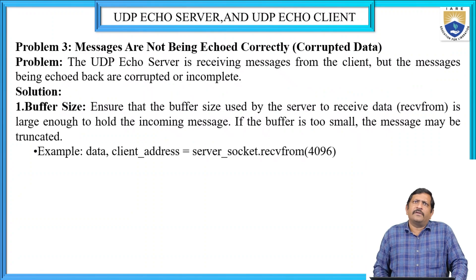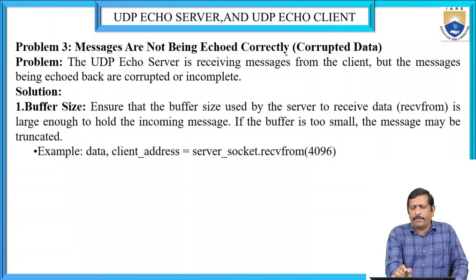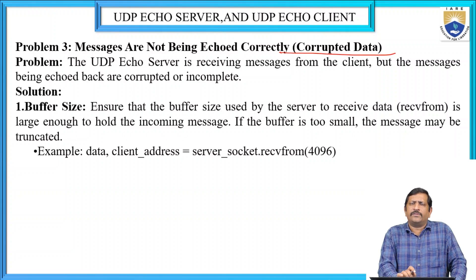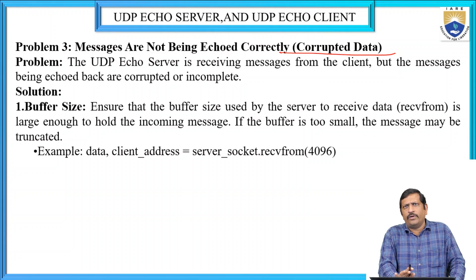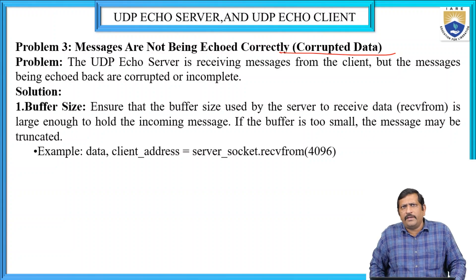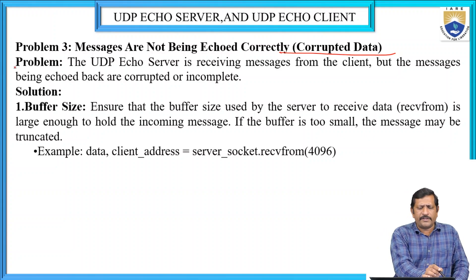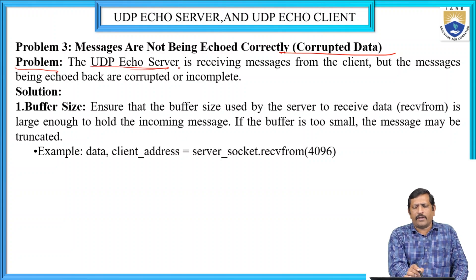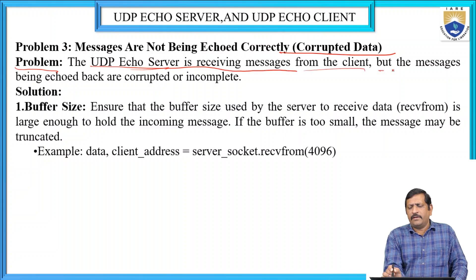The next problem: messages are not being echoed correctly. Once the client sends a message, the server does not echo it correctly — the data may be corrupted or incomplete. Due to man-in-the-middle attacks, hackers may alter the data. The problem is the UDP Echo Server receives the message from the client, but the message being echoed back is corrupted or incomplete.